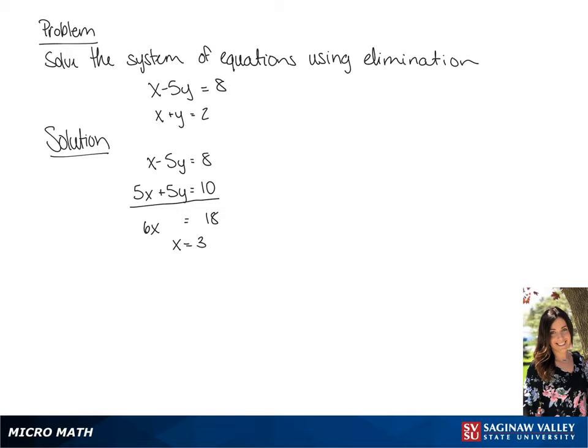Now we can plug in 3 for x in the second equation. We get 3 plus y equals 2. This gives us y equals negative 1. So the solution to this system of equations is 3, negative 1.